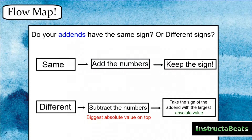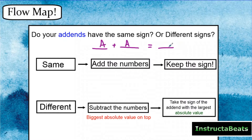The first question is kind of like a choose-your-own-adventure: you need to ask yourself, do your add-ins have the same sign or different signs? The numbers you're adding together are your parts or your add-ins, and they make your total or your sum. Ask yourself: are both of these positive or both negative, or are they different? If they're both the same sign, you're going to add the numbers and keep the sign. Go ahead and write this down in your notes.